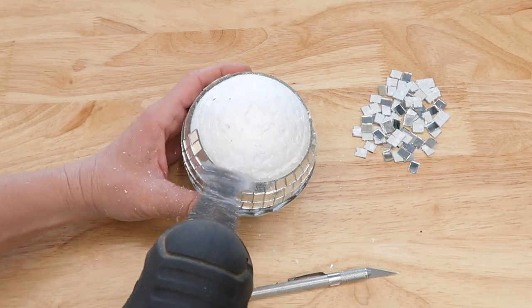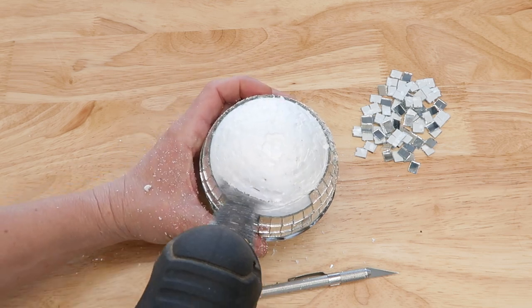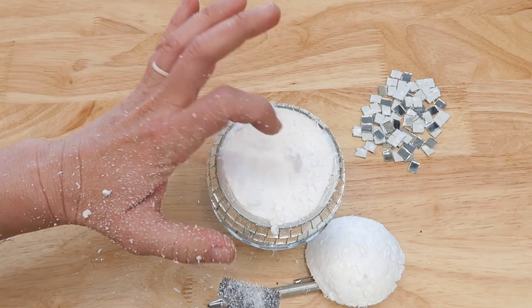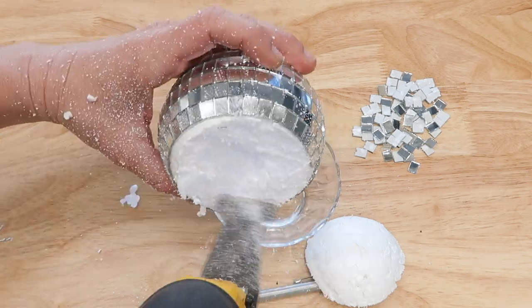I quickly found that the exacto knife was not going to make it all the way through because the smallest disco ball was actually solid. Solid styrofoam. So we were going to have to do some work to get that hollowed out.